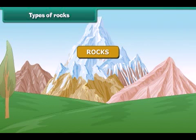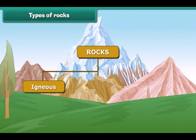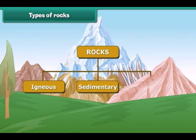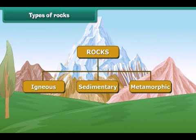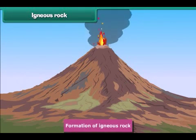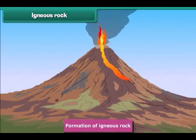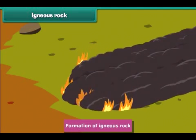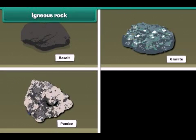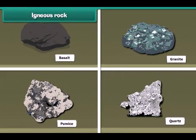There are three main types of rocks depending on how they are formed: igneous rocks, sedimentary rocks, and metamorphic rocks. Igneous rock is formed when molten rocks like lava in volcanoes cool, harden, and solidify. It is often shiny and glossy. Basalt, granite, pumice, and quartz are examples of this kind of rock.